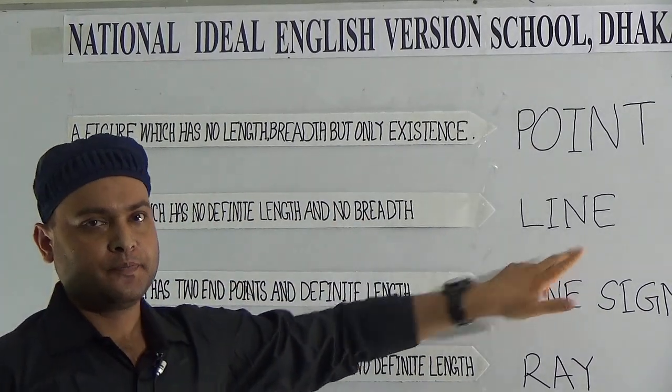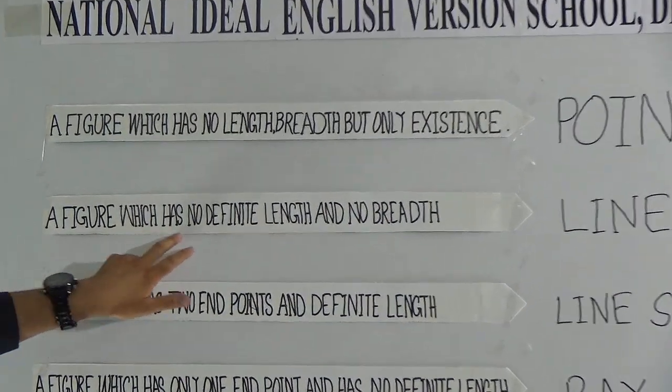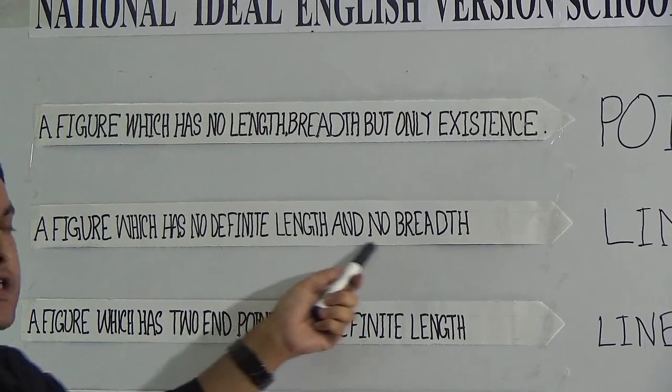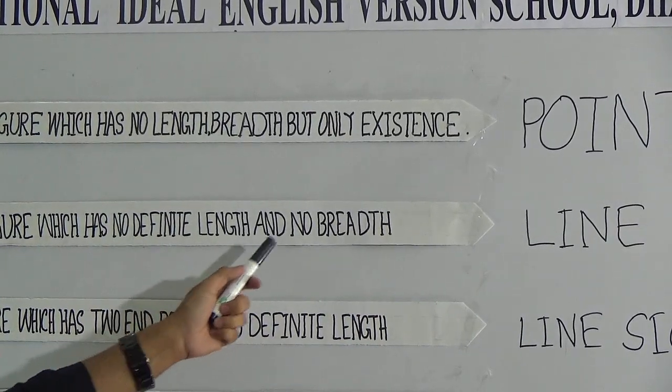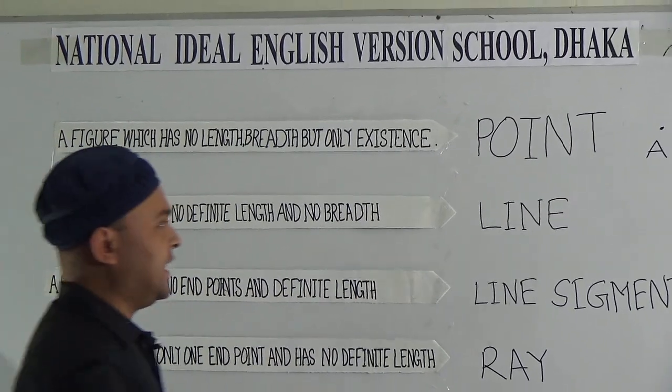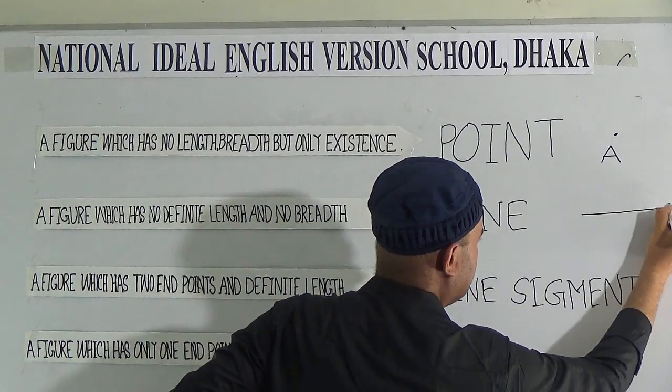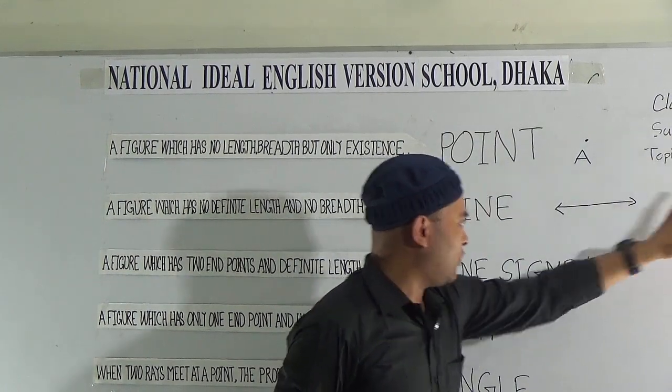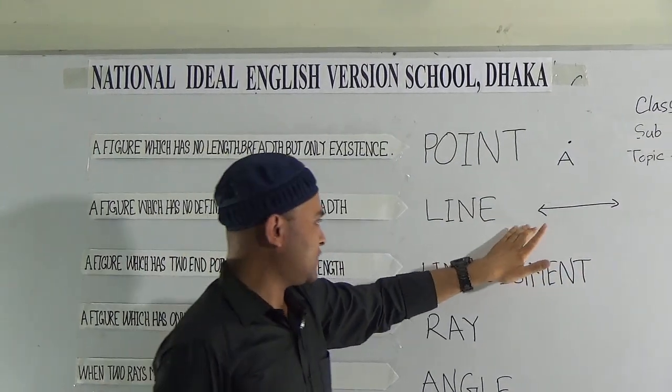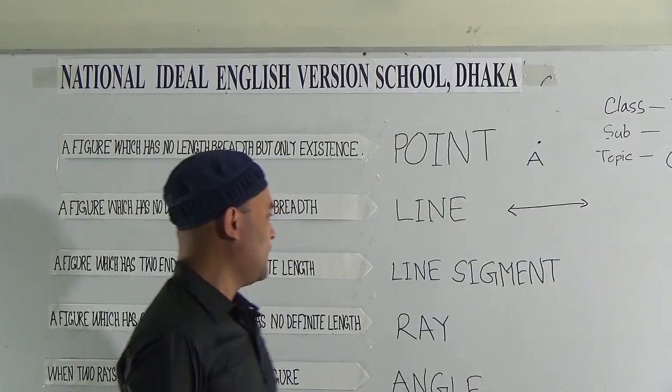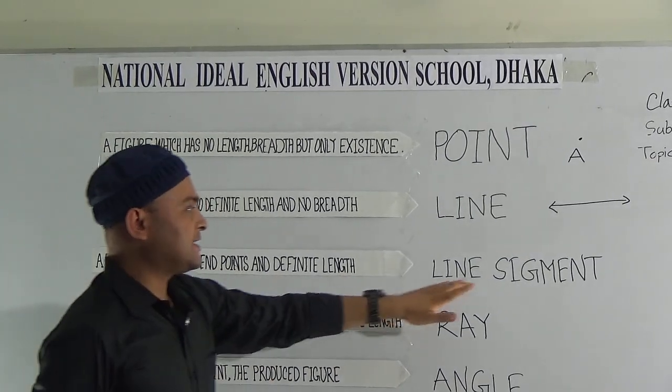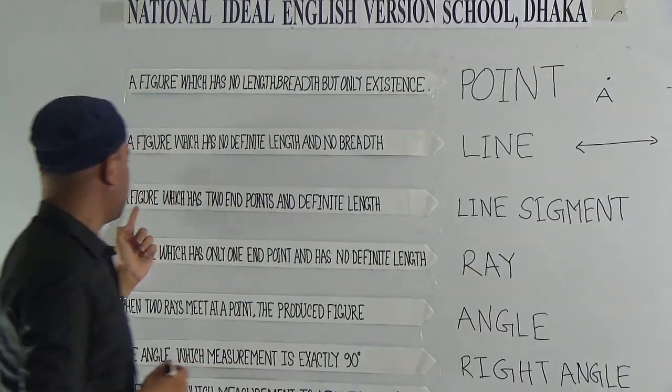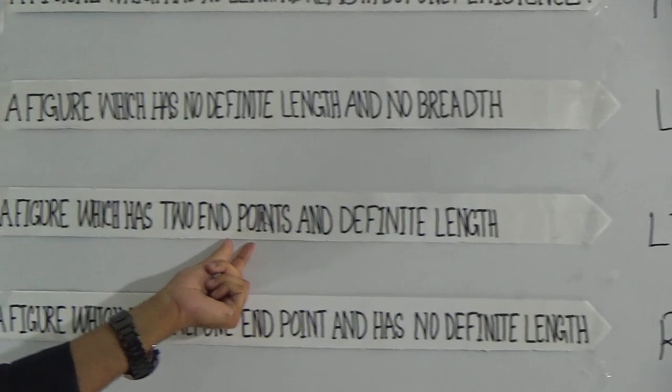Next one is line. A figure which has no definite length and no breadth. No definite length means the length is moving forward this way and that way. So it is called a line.